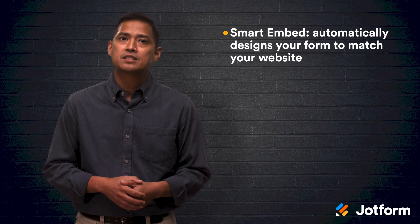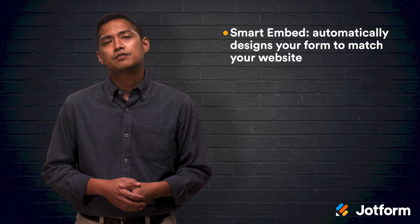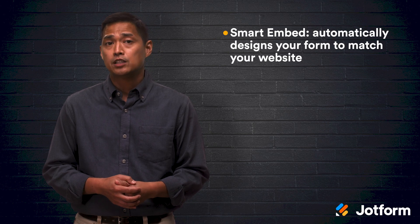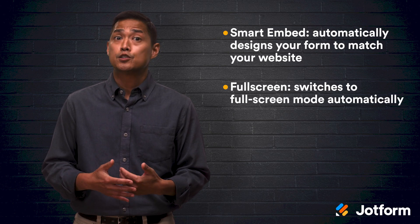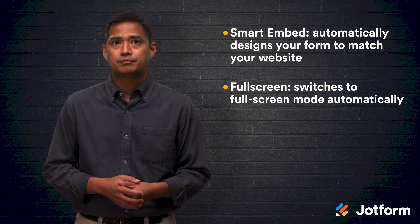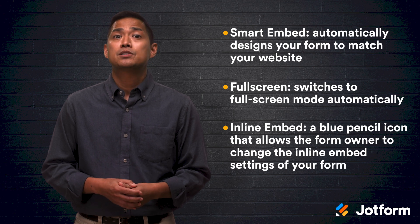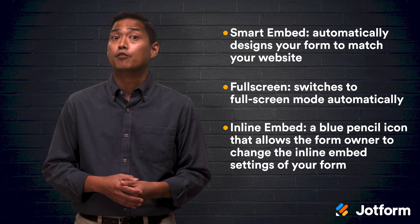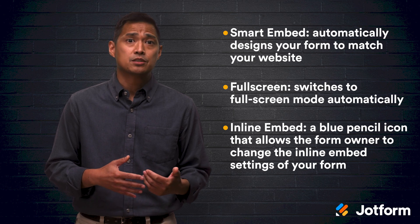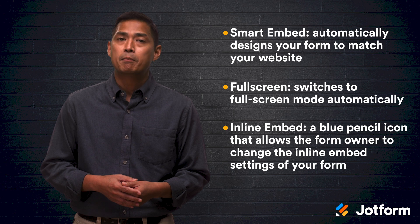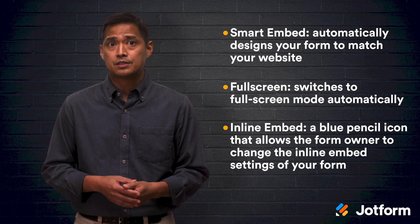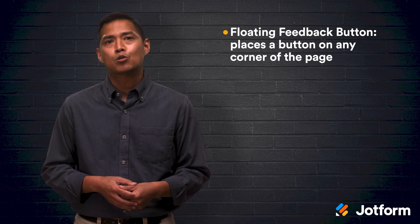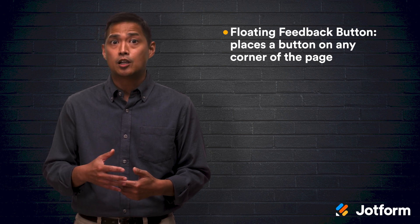To further simplify things, Card Forms makes it easy to embed on your website. Instead of designing your form to match your website's design, the form will automatically try its best to adapt to the look and feel of the page. When utilizing the Full Screen tool, you can switch to Full Screen mode automatically. With the Inline Embed feature, a blue pencil icon pops up in the top left-hand corner. This pencil allows the form owner to change the inline embed settings. Once you click that blue pencil, you'll see a variety of embed options like frame size, background color, and other smart embed options. The last of the smart embed options is our Floating Feedback button, which places a button on any corner of the page, and you can customize it according to your preference.